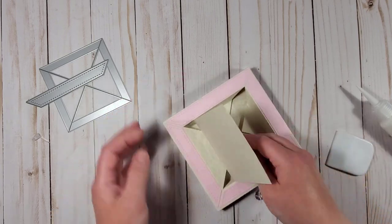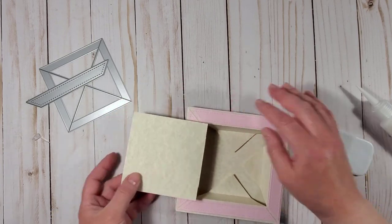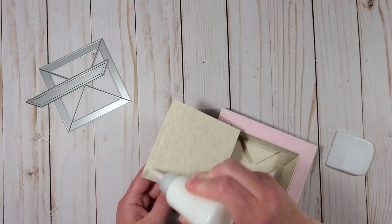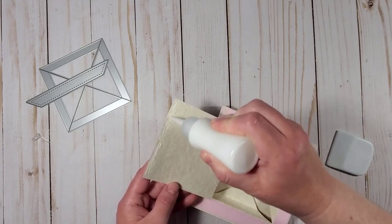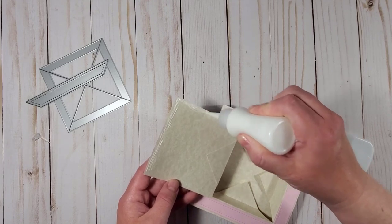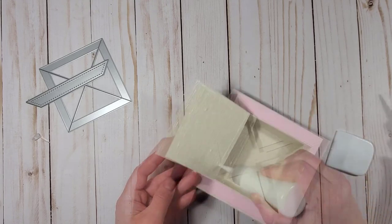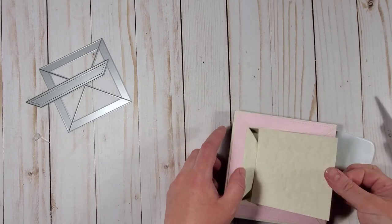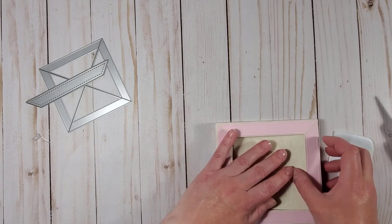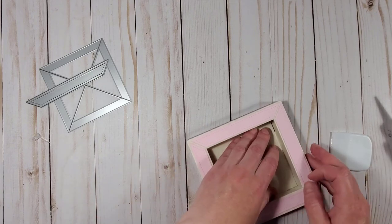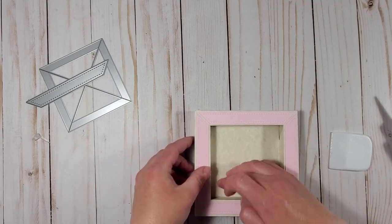And now I will open it again and apply glue to the rest of this paper piece and once again I will put it back on the inside of the shadow box.